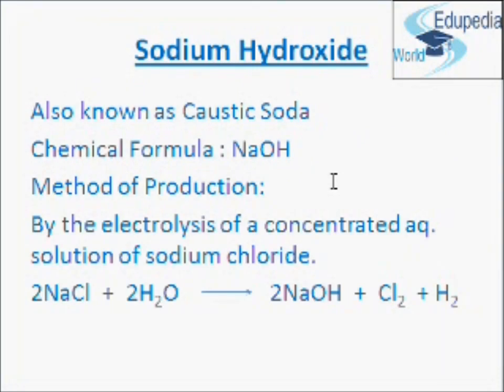Now, sodium hydroxide. As we have discussed, common salt is a raw material for making many chemicals. We will now discuss some chemicals which are obtained from common salt. First, sodium hydroxide. Sodium hydroxide is commonly known as caustic soda. The chemical formula of caustic soda or sodium hydroxide is NaOH. The raw material for producing sodium hydroxide is sodium chloride or common salt.